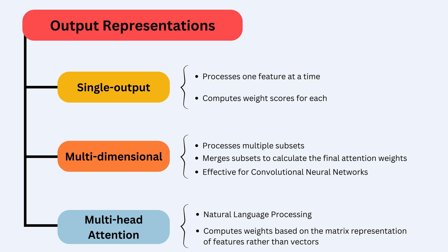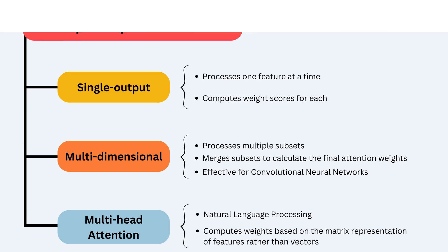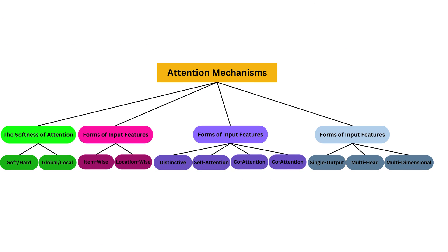Understanding these diverse output representation strategies provides a nuanced view of how attention mechanisms adapt to different tasks and domains. It's crucial to note that the attention mechanisms explained here share fundamental principles emerging from researchers' efforts to adapt or enhance the basic attention mechanism for their specific tasks. However, not all these mechanisms are applied in computer vision, particularly in geospatial tasks. In deep learning-based image processing, the attention mechanism serves to focus on specific features, locations, or aspects within an image, broadly falling into two major types: channel attention and spatial attention.